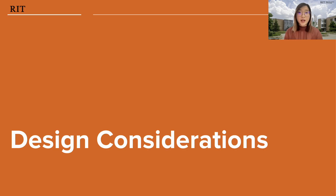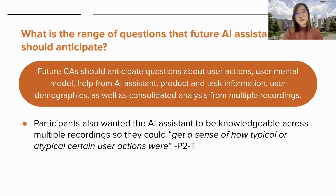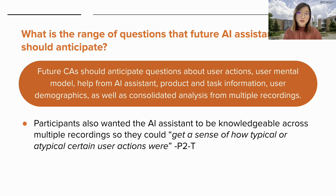Based on our results, we derived design considerations to answer key questions for the future development of conversational AI assistants for UX evaluation. First, we identified the range of questions future assistants should anticipate: user actions, user mental model, help from AI assistant, product and task information, user demographics, and consolidated analysis from multiple recordings. Participants wanted the assistant to be more knowledgeable across multiple recordings so they could get a sense of how typical or atypical certain user actions were.